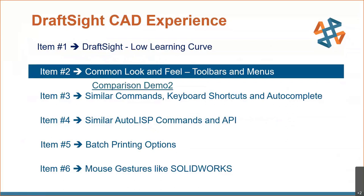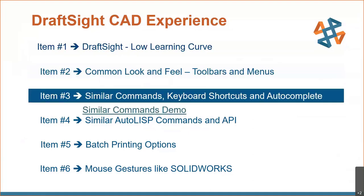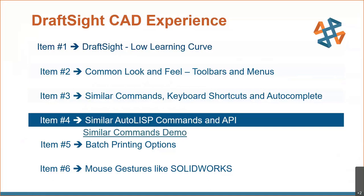We'll look at the common look and feel of the two toolbars and menus. There are similar commands and keyboard AutoComplete when you type in the filter for keyboard commands. You also get your AutoLISP commands, and the API now supports visual AutoLISP as well. That's printing options available to you. There are also mouse gestures on the SOLIDWORKS side — very similar similarities between the two. Today we're focused more on DraftSite and the similarities between AutoCAD.